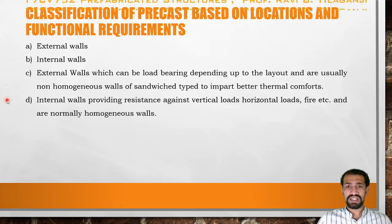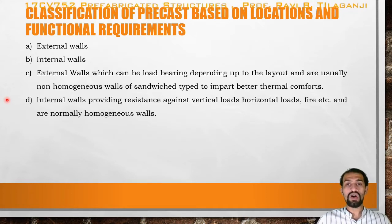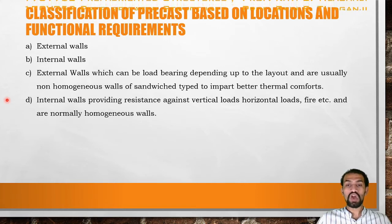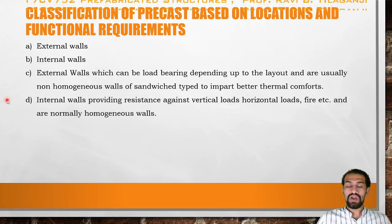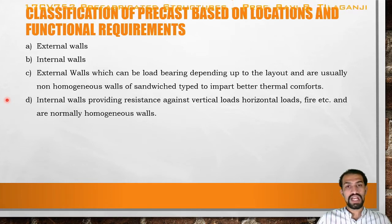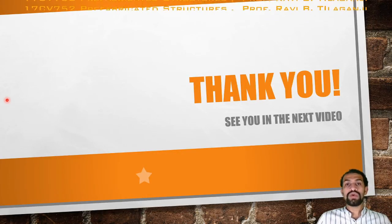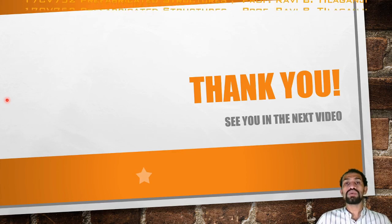Internal walls provide resistance against vertical loads, horizontal loads, fire, etc., and are normally homogeneous walls. Similar to the four-inch brick partitions in normal construction, here also prefabricated or precast panels are used for vertical and horizontal load transfer, as partition walls, and for fire resistance. These are homogeneous because there is no provision for sandwich, hollow, ribbed, or non-load-bearing type construction. This concludes the topic of prefabricated large panels; the next video will continue with prefabricated components.